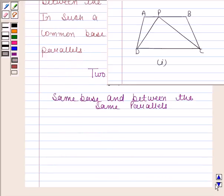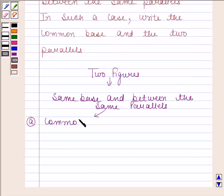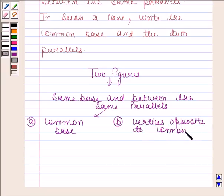Condition A: they have a common base. And condition B: the vertices opposite to the common base of each figure lie on a line parallel to the base.